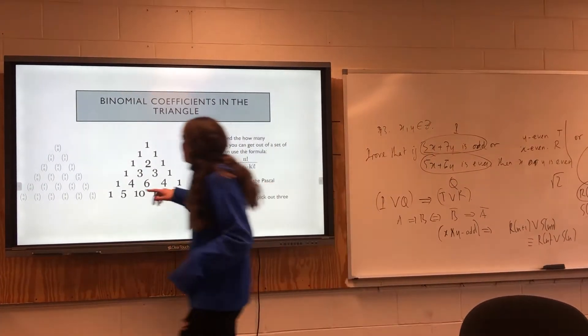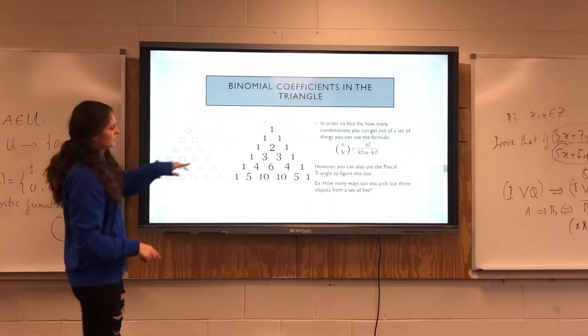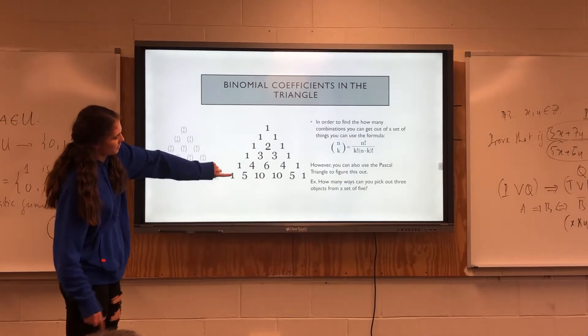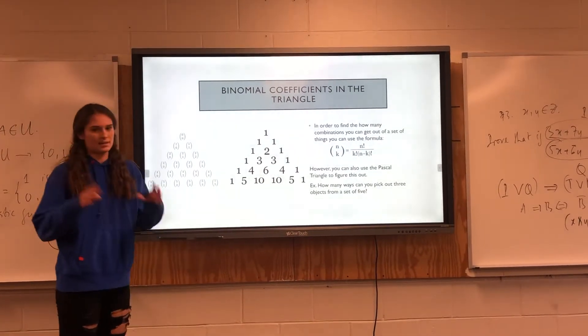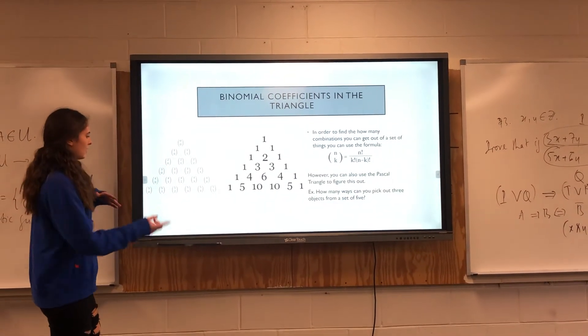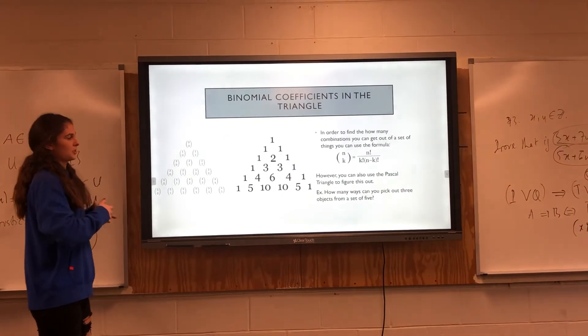The top row is the zero row, first row, second row, third. So, one, two, three, four, five, and then you go three over: one, two, three. So, you have ten different ways to pick three different objects from a set of five, and that's shown here as five choose three. That's how you can see the binomial coefficients within the triangle.